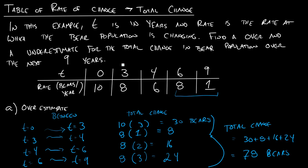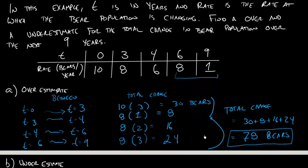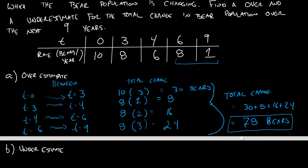So between t equals 0 and t equals 9, our population increased by 78 bears. That's a lot of bears. I would not want to live where this is happening. Now, so the next part of this problem asks us for an underestimate in the total change in bears. So this is our worst-case scenario. Is our best-case scenario kind of any better?